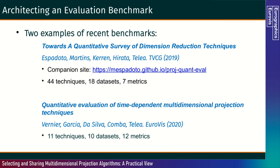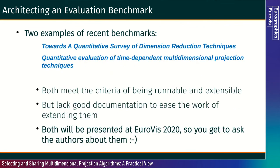That benchmark evaluated 44 different techniques over 18 datasets using seven metrics and many different parameter settings for each technique. The second paper is Quantitative Evaluation of Time-Dependent Multidimensional Projecting Techniques by Vernier, Garcia, Da Silva, Comba, and Telea, being presented at EuroVis 2020, where they evaluated 11 techniques over 10 datasets using 12 metrics. Both benchmarks meet the criteria of being runnable and extensible, but lack good documentation to ease the work of extending them. Both will be presented at EuroVis 2020, so you get to ask the authors about them.